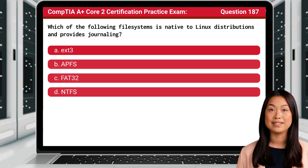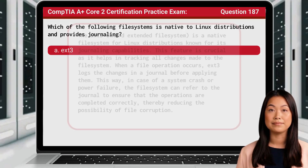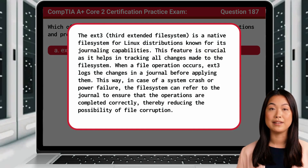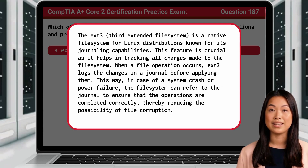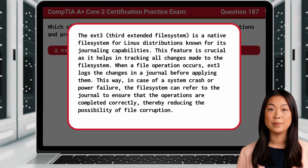The answer is A: EXT3. The EXT3, or Third Extended File System, is a native file system for Linux distributions known for its journaling capabilities. This feature is crucial as it helps in tracking all changes made to the file system. When a file operation occurs, EXT3 logs the changes in a journal before applying them. This way, in case of a system crash or power failure, the file system can refer to the journal to ensure that the operations are completed correctly, thereby reducing the possibility of file corruption.